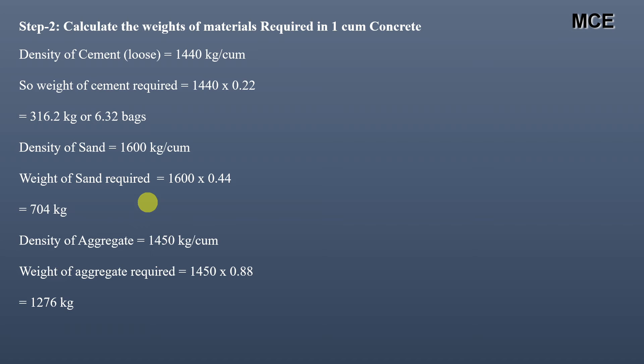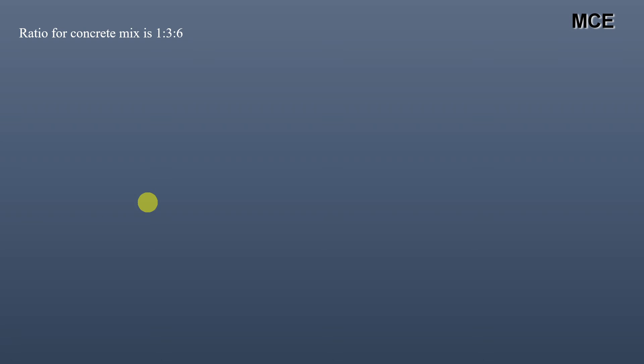This was for the mix 1:2:4. Now we will find the quantity of cement, sand, and aggregate for the 1:3:6 mix. The ratio is 1:3:6, which means if you are taking one part of cement, you take three parts of sand and six parts of aggregate of the same size.